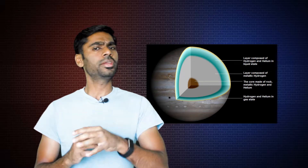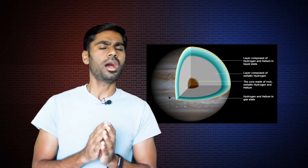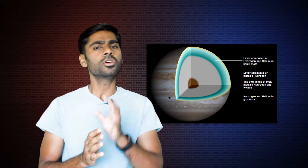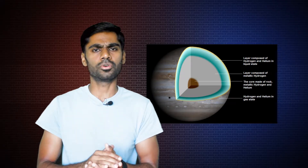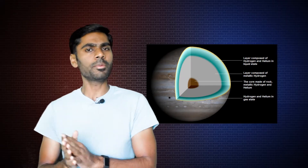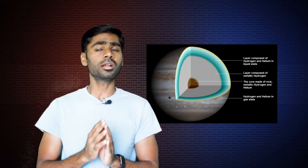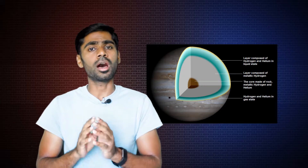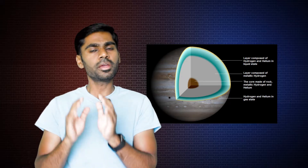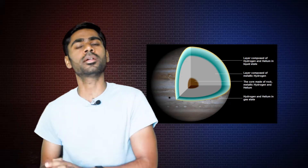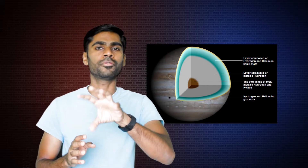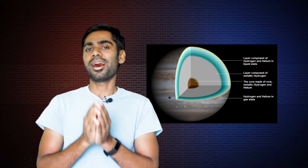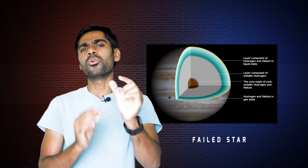Since Jupiter is composed of high hydrogen atoms and helium, how is the direct source of Jupiter? Jupiter has hydrogen and helium, and a fusion reaction to it. Jupiter's mass is less than 50% of what is needed for a fusion reaction. That's why it's called a failed star.